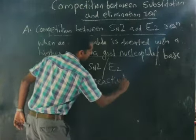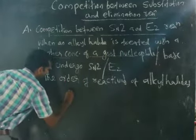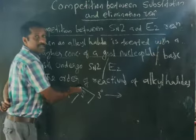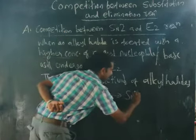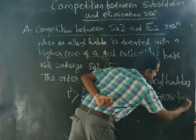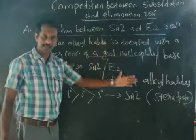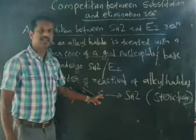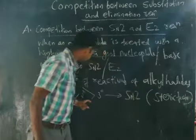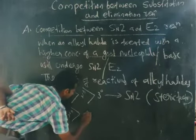We know the order of reactivity of alkyl halides towards SN2 reaction is: primary > secondary > tertiary. This order is due to the steric factor — as steric hindrance increases from primary to tertiary, SN2 becomes less favorable. When an alkyl halide is treated with a strong base or nucleophile, nucleophilic substitution via SN2 follows this order.